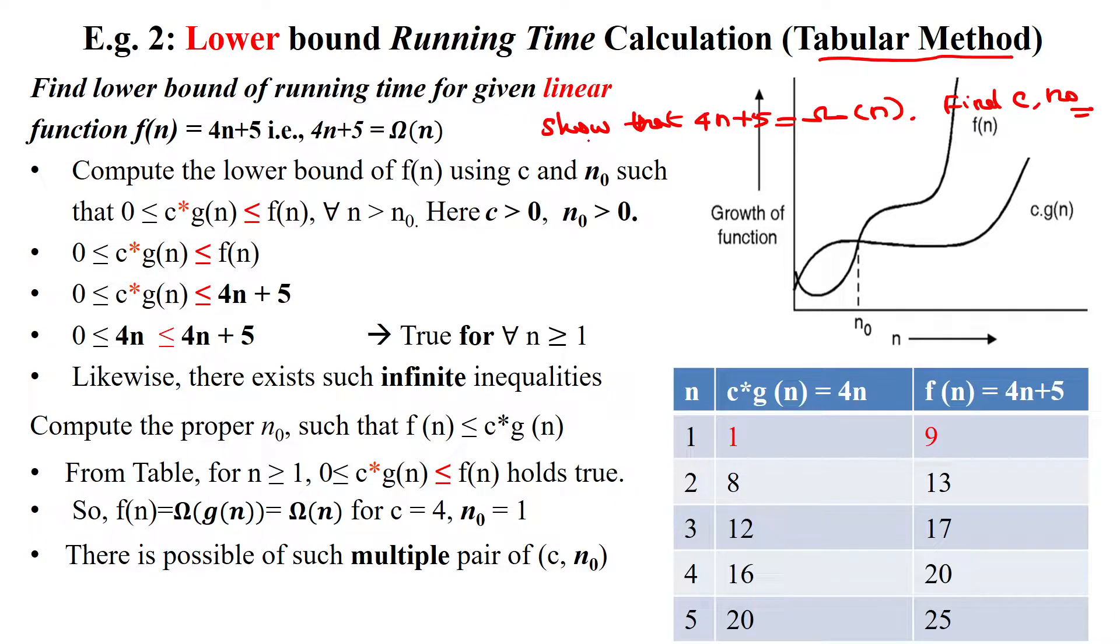From this given linear function, we have to identify what is the criteria for big omega of n. For big omega of n, we are having the criteria 0 less than or equal to c times g(n) less than or equal to f(n). This is for all input size n greater than n₀.